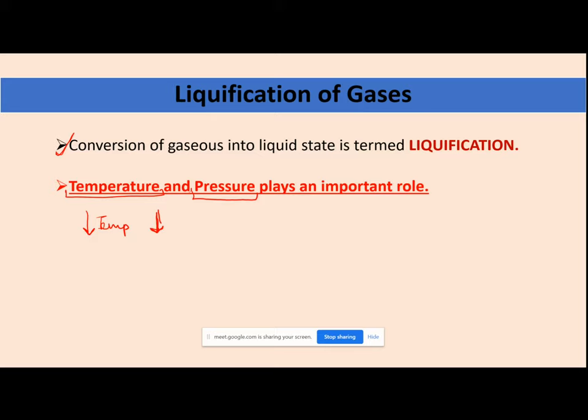When you apply high pressure on your gas molecules, high pressure means that you compress your gas molecules. The intermolecular distance will be reduced, and molecules will try to interact with one another and form some bond. They will make attractive forces, and that will help in conversion from the gaseous state to the liquid state. Your gases will easily convert to the liquid state.